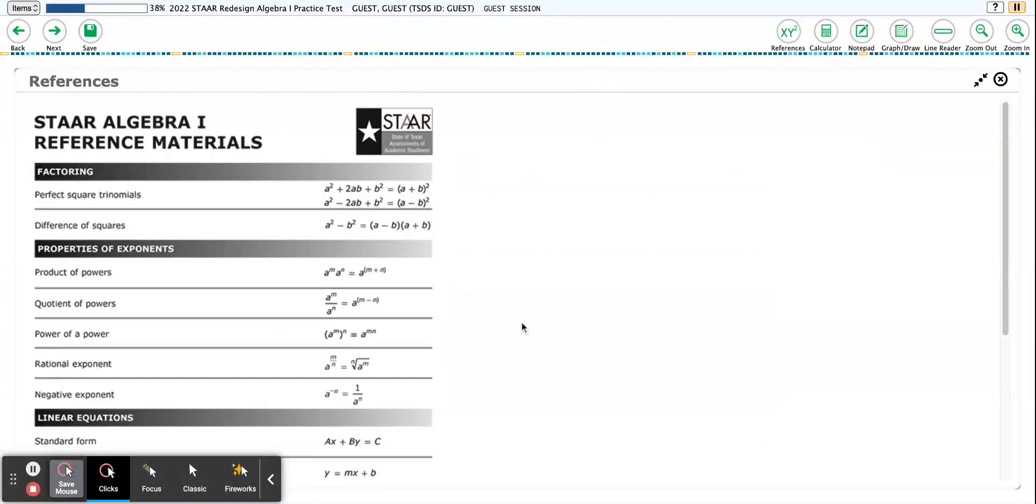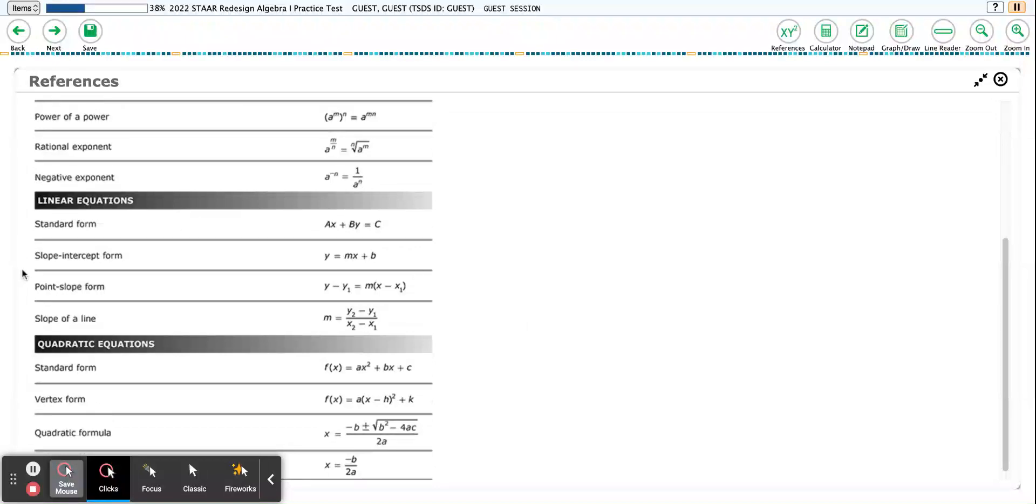I'm looking for that slope intercept form. If I look for slope intercept form, there it is right there. My y equals mx plus b, and m, this m right here is the same m that is right here and right here.